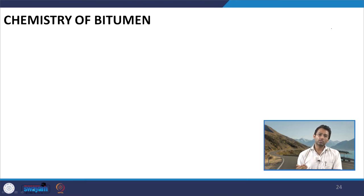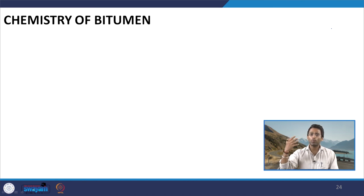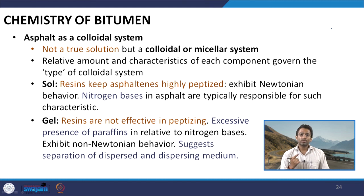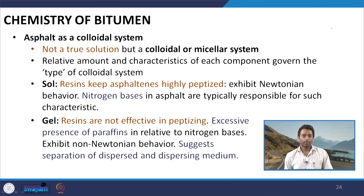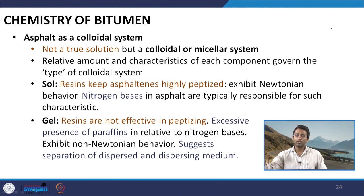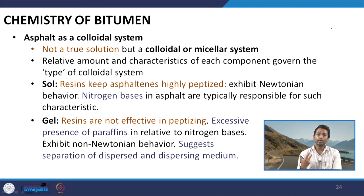Having discussed about these broad categories — asphaltenes, resins, saturates, and aromatics — and the properties of these individual components, let us now understand asphalt as a colloidal system, that is how these different components interact and are present within the bitumen system. This particular model describes the distribution of fractions within the bitumen. It says that asphalt is a colloidal system — not a true solution but a micellar system — and the relative proportion of the individual fractions, that is the amount of asphaltenes and maltenes, basically decides the type of this colloidal system.